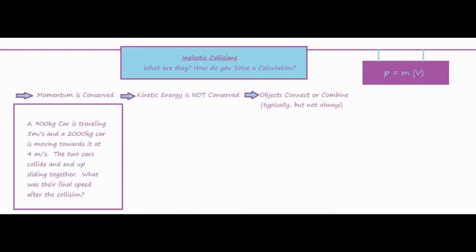In this video I'm going to be talking about inelastic collisions — what are they and how do you solve an inelastic collision type problem. Looking at our situation in this purple box: a 900 kilogram car is traveling 5 meters per second and a 2,000 kilogram car is moving towards it at 4 meters per second. The two cars collide and end up sliding together. What was their final speed after the collision? With an inelastic collision we'll typically use conservation of momentum, using momentum equals mass times velocity.